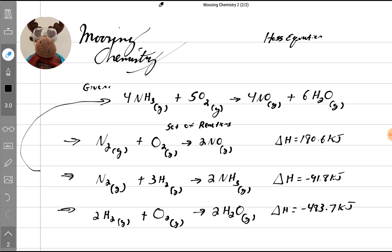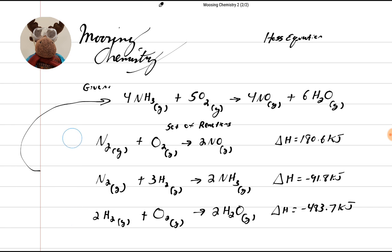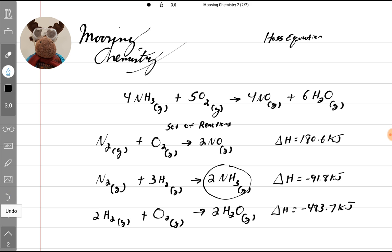So let's have some fun. Now, the first thing I want to do is this. NH3, this guy right here, is on the wrong side of the yield sign. So what we need to do is we need to flip this equation to get that on the right side.